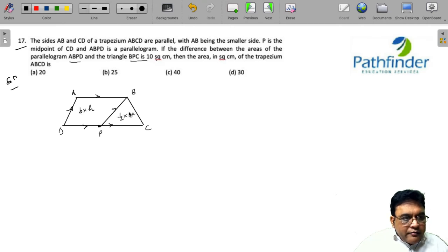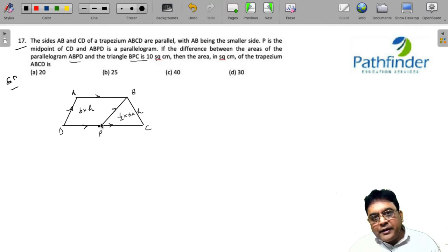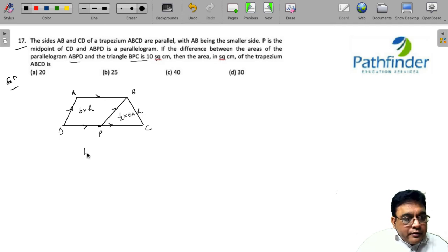And the area of the triangle must be half base into height. The height for the parallelogram and the triangle is the same. So what do we have? The difference between the area of the parallelogram and the triangle is 10 square centimeters.